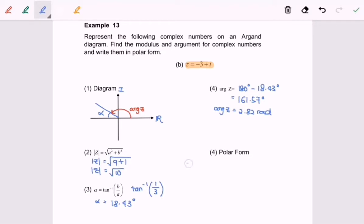Finally, z will be equal to square root of 10 bracket cos argument which is 2.82 plus i sine argument 2.82. So here we are and thanks for watching.